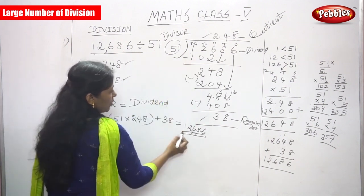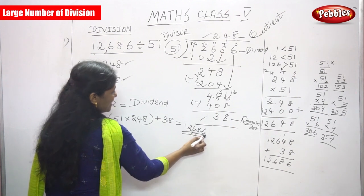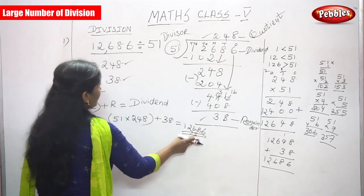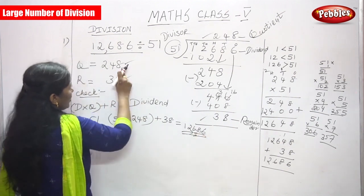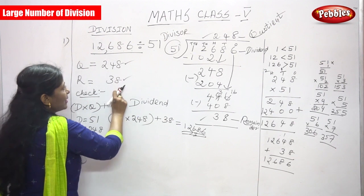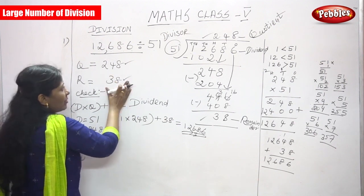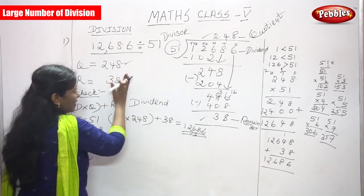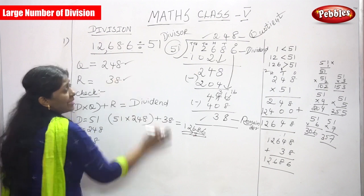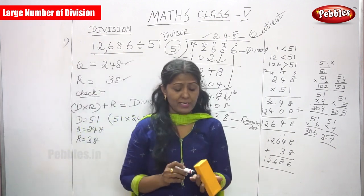The question is 12,686 divided by 51. The quotient is 248 and the remainder is 38. The answer is correct. Whatever you have done using the same method, you will get the right and perfect answer. Thank you so much.